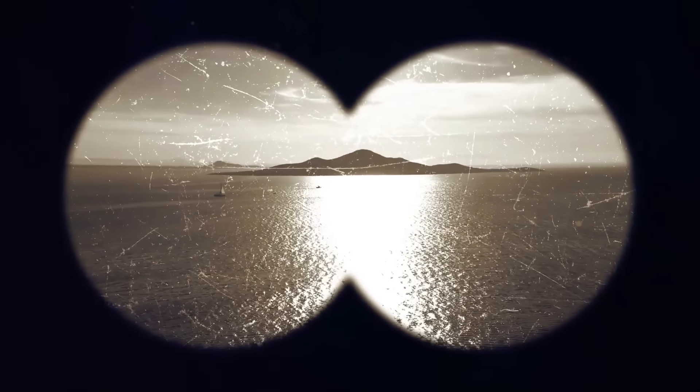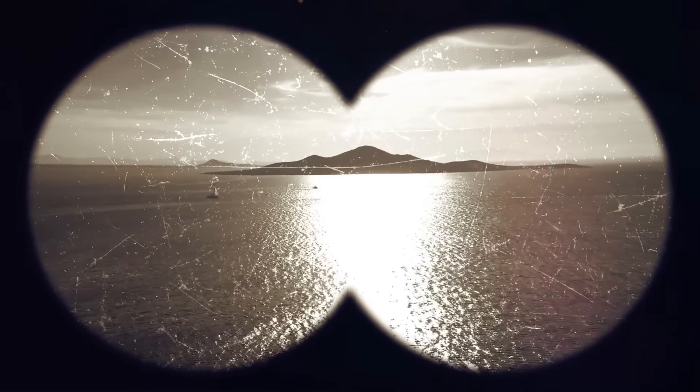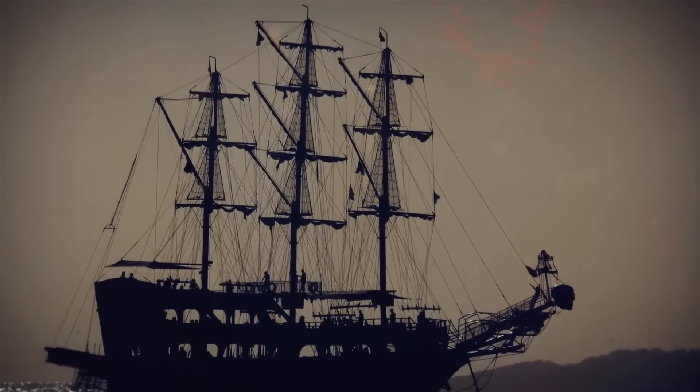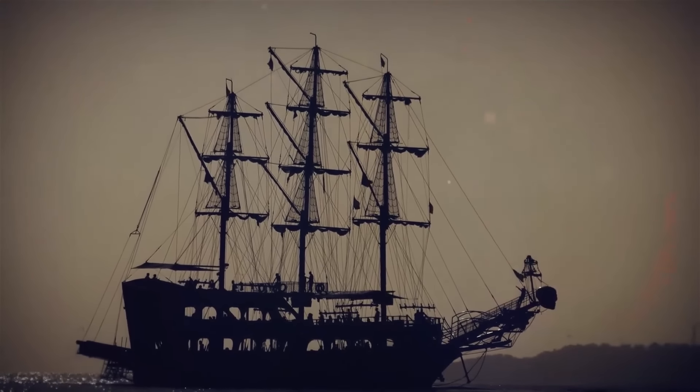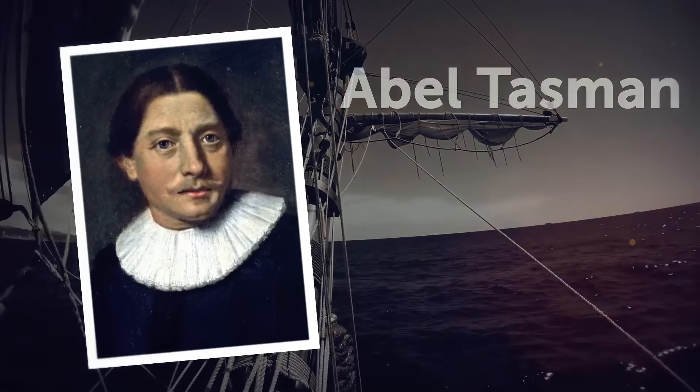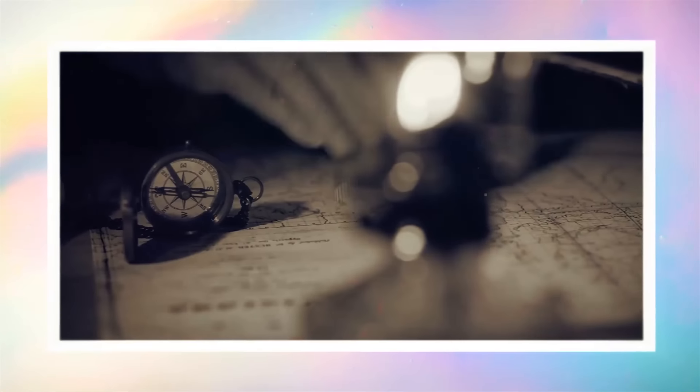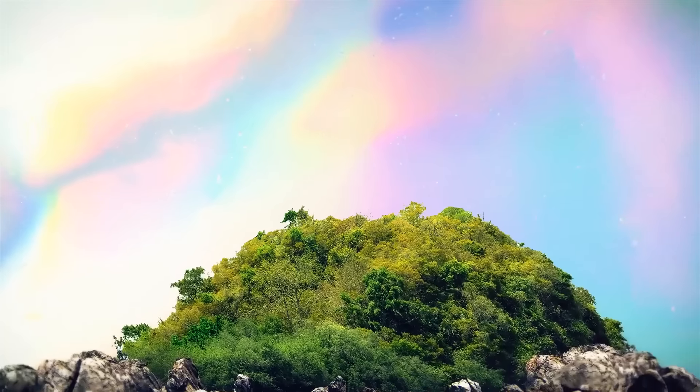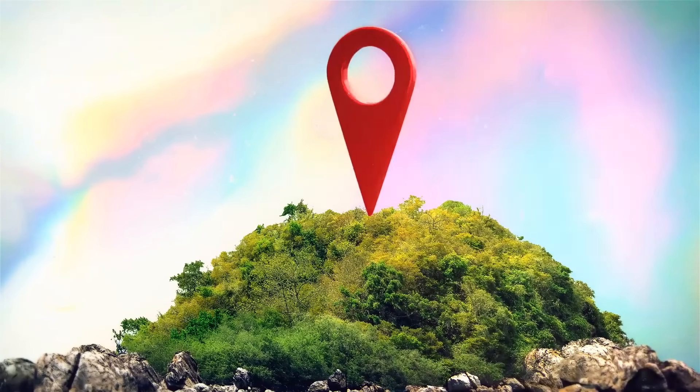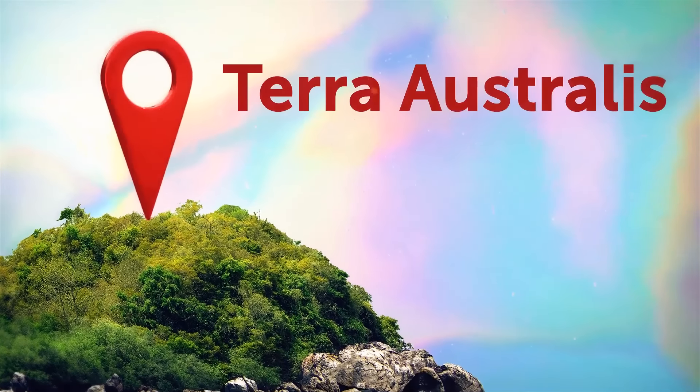The search for Zealandia lasted for 375 years. It all started in 1642, when Dutch seafarer and explorer, Abel Tasman, set on a mission from Jakarta, Indonesia. Back in the day, Europeans were sure that there had to be a massive land down under to balance out their own continent up north. They even had a fancy name for it, Terra Australis.